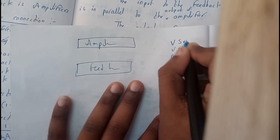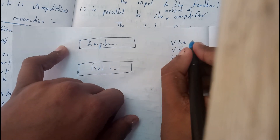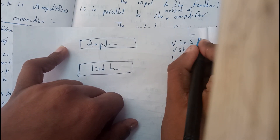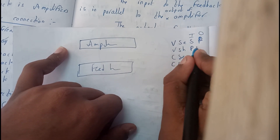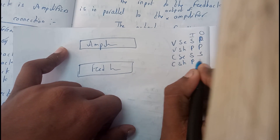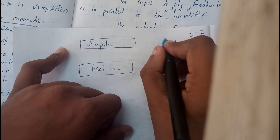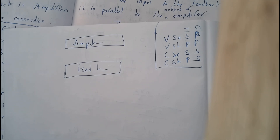For voltage series the input is series and output is parallel (SP). Voltage shunt is parallel-parallel (PP). Current series is series-series (SS). Current shunt is parallel-series (PS). By using this code only, you can directly draw the diagram without any memorization.